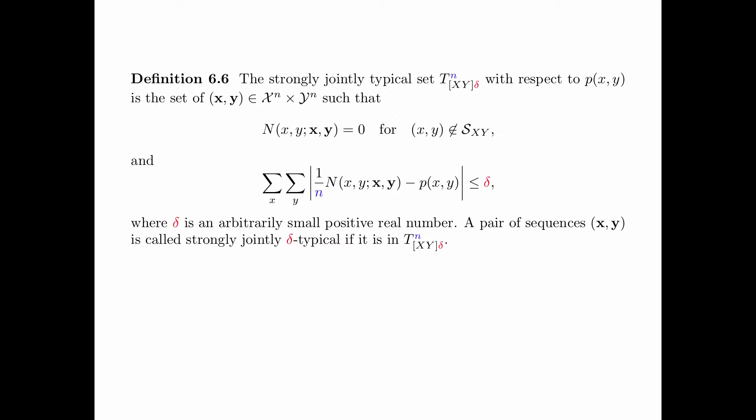In definition 6.6, we define the strongly jointly typical set. The jointly strongly typical set T_{XY,δ}^n, with respect to the generic distribution p, is the set of pairs of sequences x and y such that the number of occurrences of (x, y) is equal to 0 for (x, y) not in the support of (X, Y), and the sum over x and y of the absolute difference between the relative frequency of (x, y) and the true probability p(x, y) is less than or equal to δ, where δ is an arbitrarily small positive real number. A pair of sequences x, y is called strongly jointly delta-typical if it is in T_δ^n.